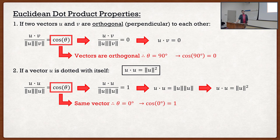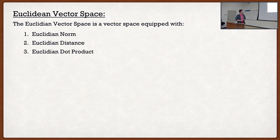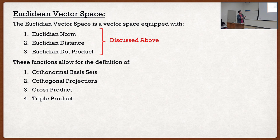Let's talk about Euclidean vector spaces. We have vector spaces, and each must have these functions defined. If we take our vector space and define those three functions — the Euclidean norm, the Euclidean distance, and the Euclidean dot product — we now have a Euclidean vector space. This allows us to define orthonormal basis sets, orthogonal projections, cross product, and the triple product. All of these, besides maybe orthonormal basis sets, you guys have seen before.